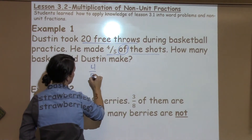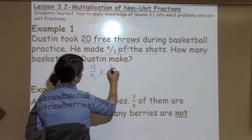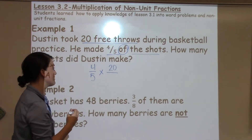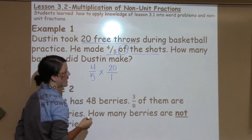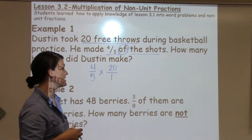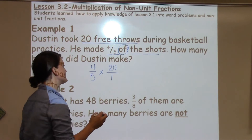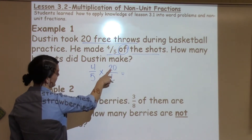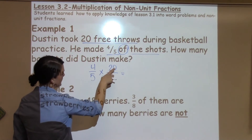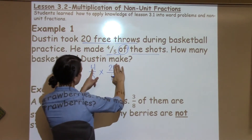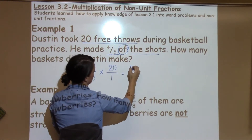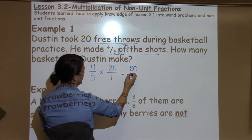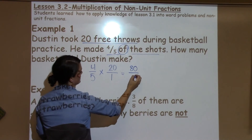So four-fifths of 20. I want my 20 to look like a fraction. Anytime I want a whole number to look like a fraction, I just place it over 1, and it does not change the value. So now I just get to multiply. I can take 4 times 20 — using the zeros trick, I do 4 times 2 is 8, then add the zero. So 4 times 20 is 80, and 5 times 1 is 5.